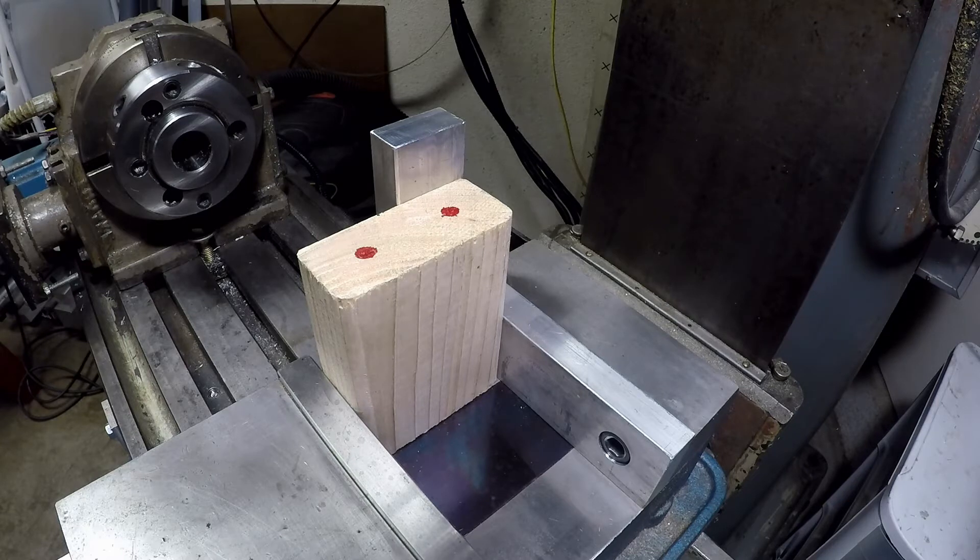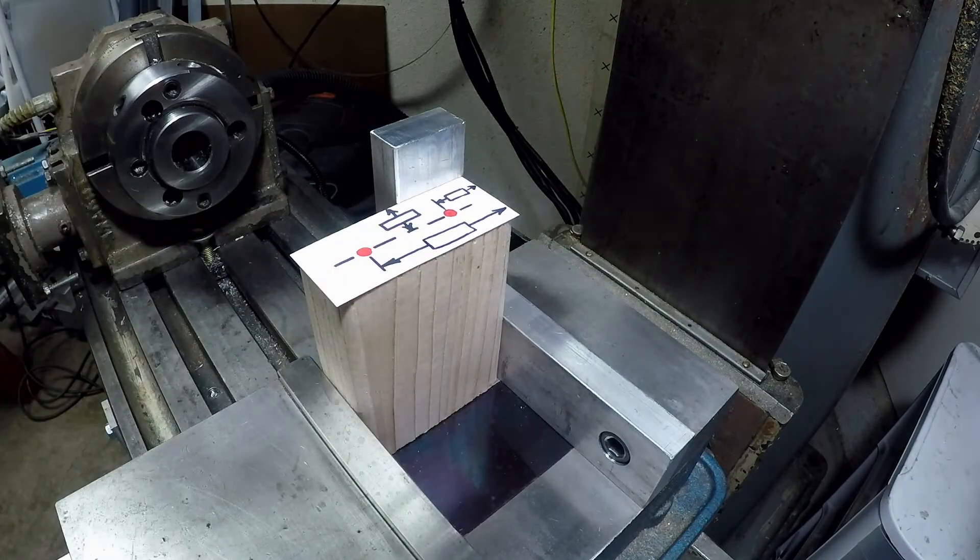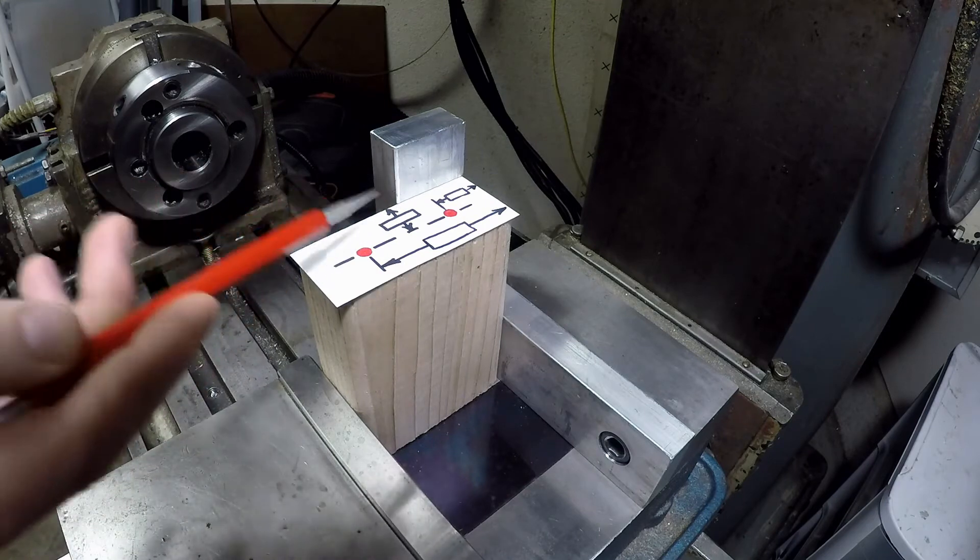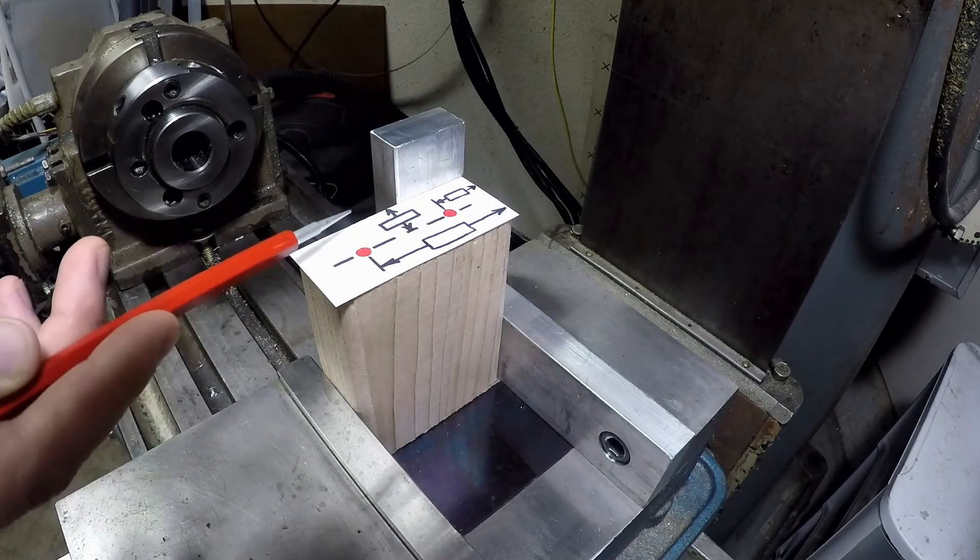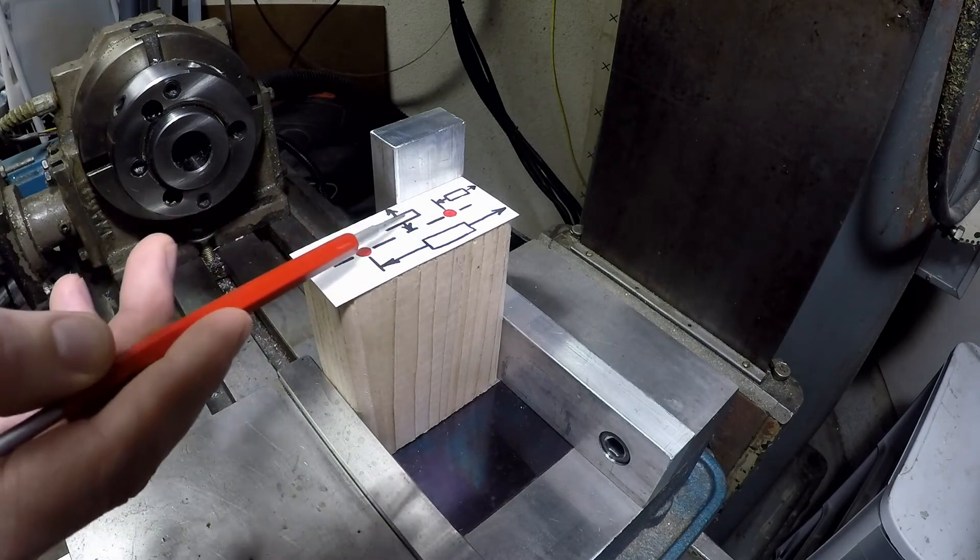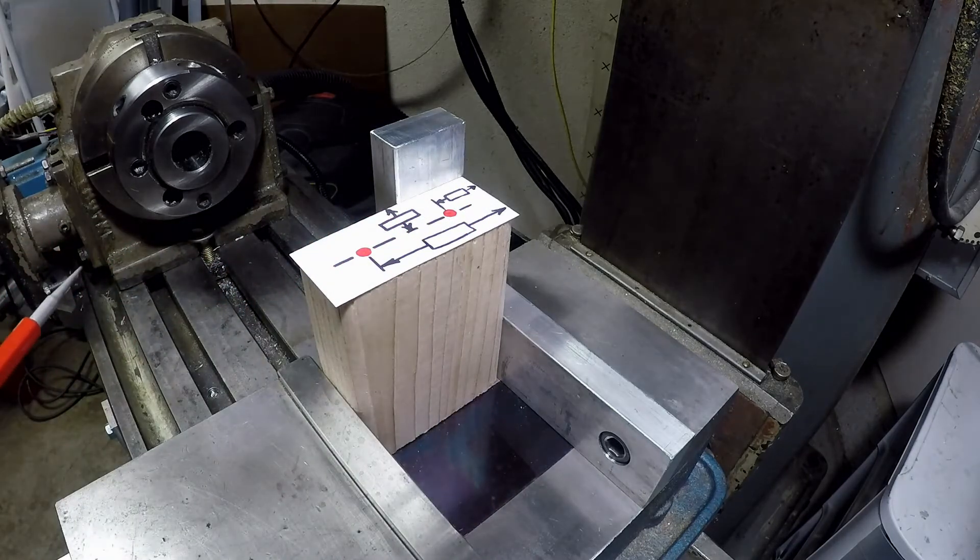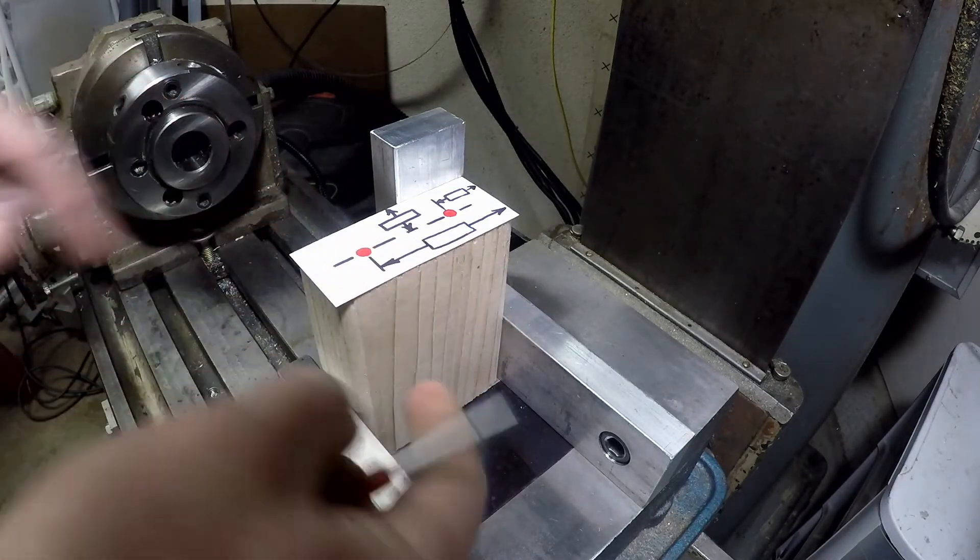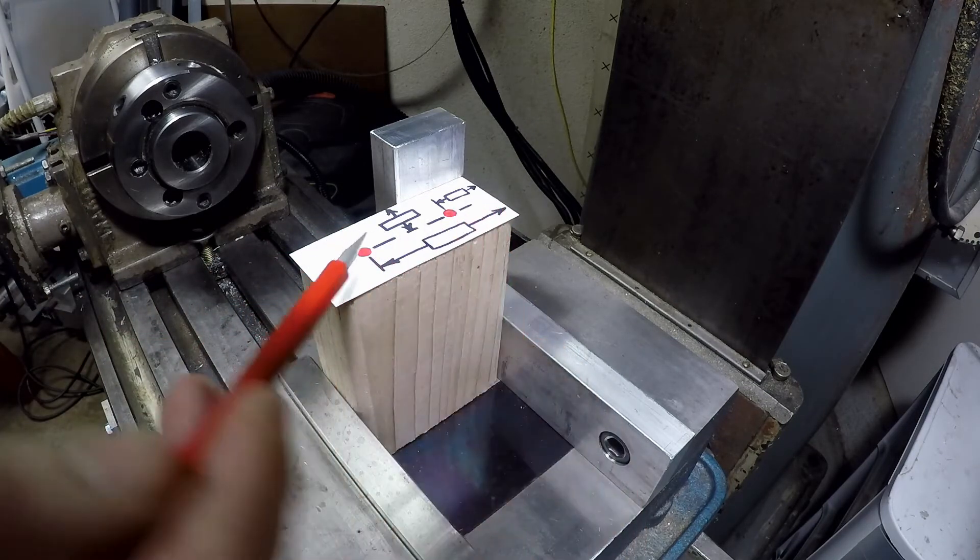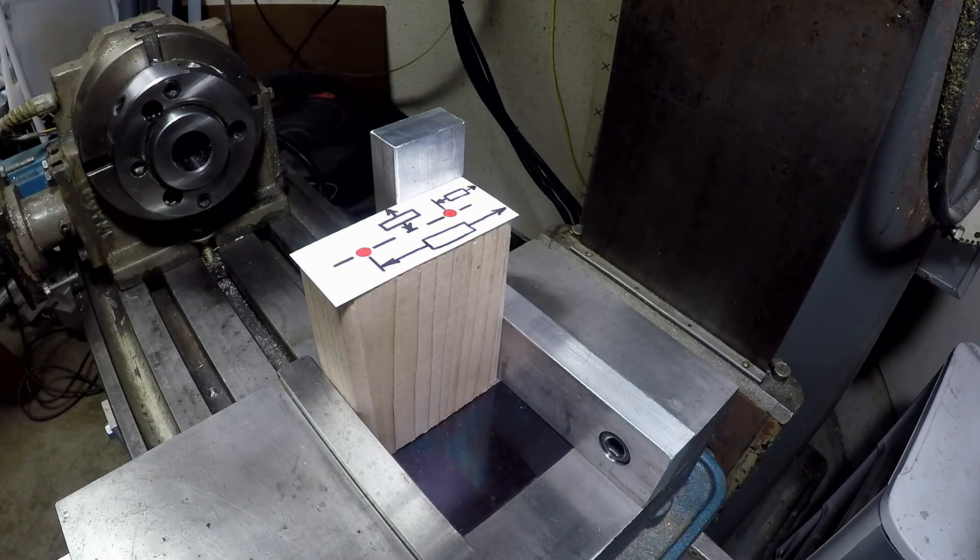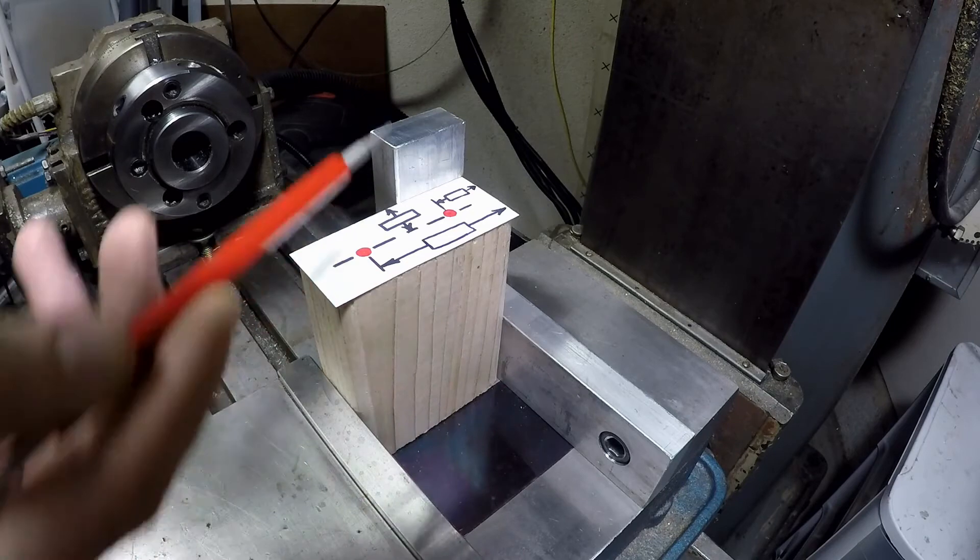The reason for that is that we're programming this machine based on a distance from these fixed jaws. From this surface we're going a programmed distance - it would be this distance to this hole and to this hole. If we're going to program this hole we put in this number to go this far and then we put in this number to go this far and it puts in that hole. That is independent of how big this block is.